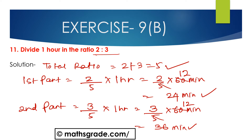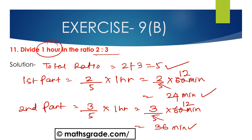If we add the first part and second part — 24 minutes plus 36 minutes — we get 60 minutes, which is equal to 1 hour. So our answer is correct. Dividing 1 hour in the ratio of 2 is to 3, the first part is 24 minutes and the second part is 36 minutes.